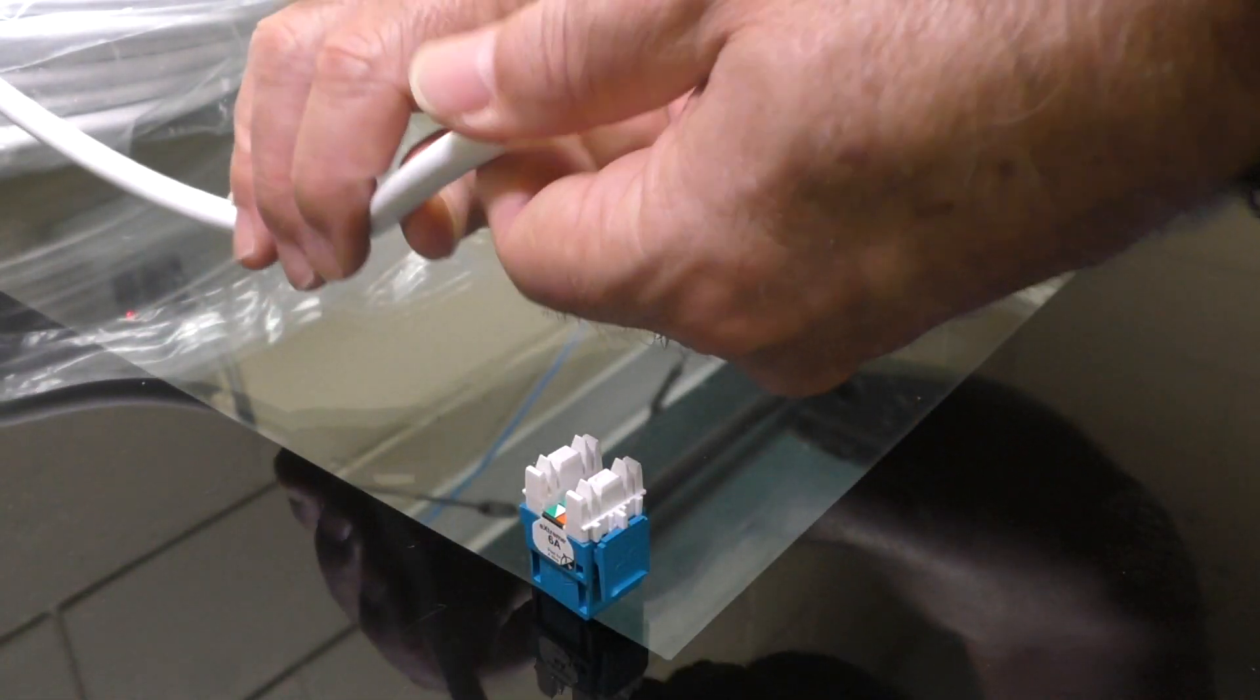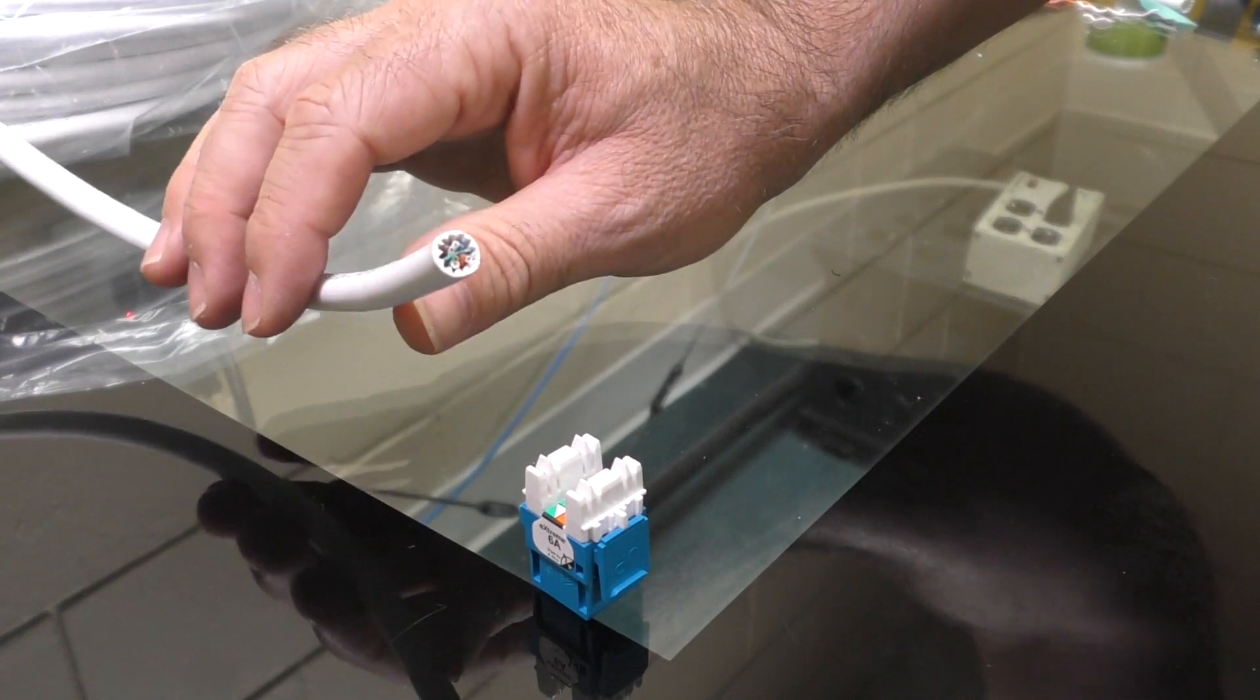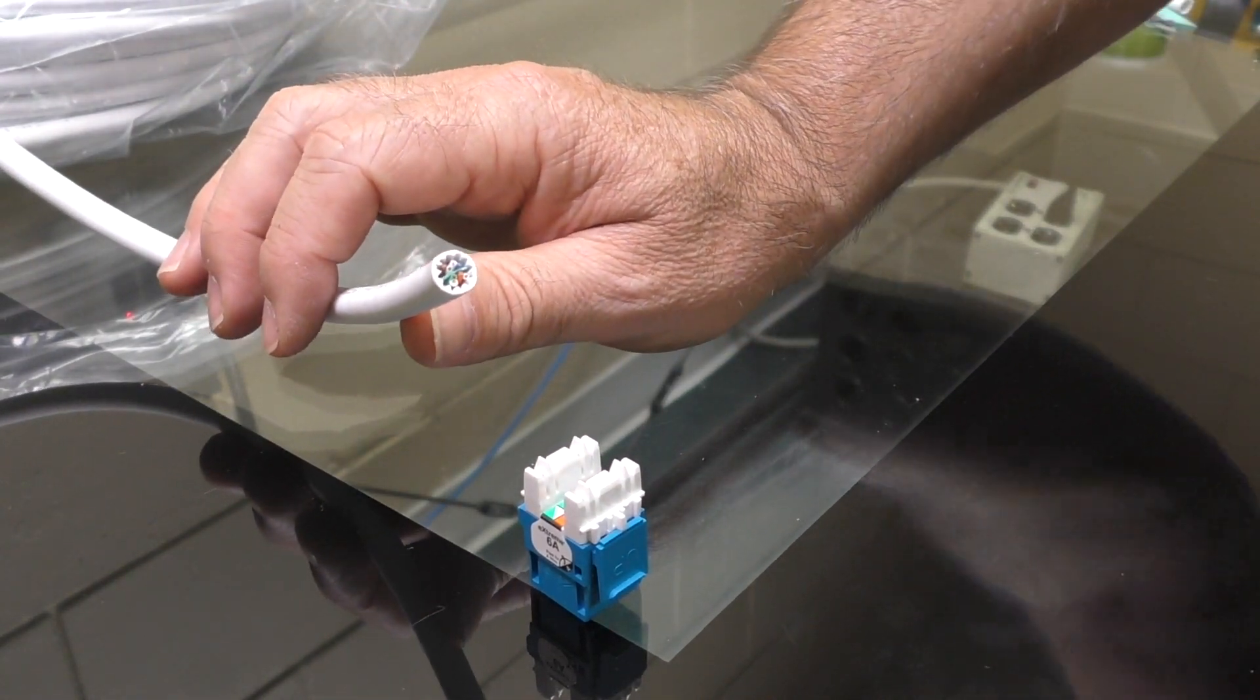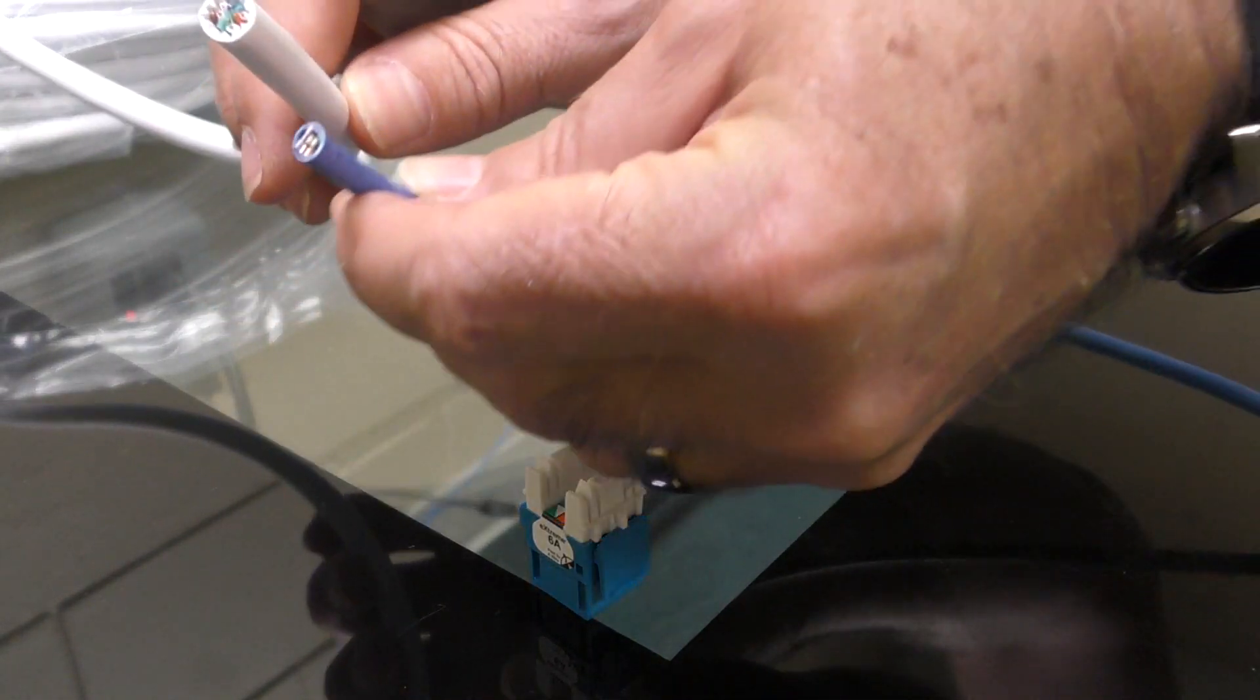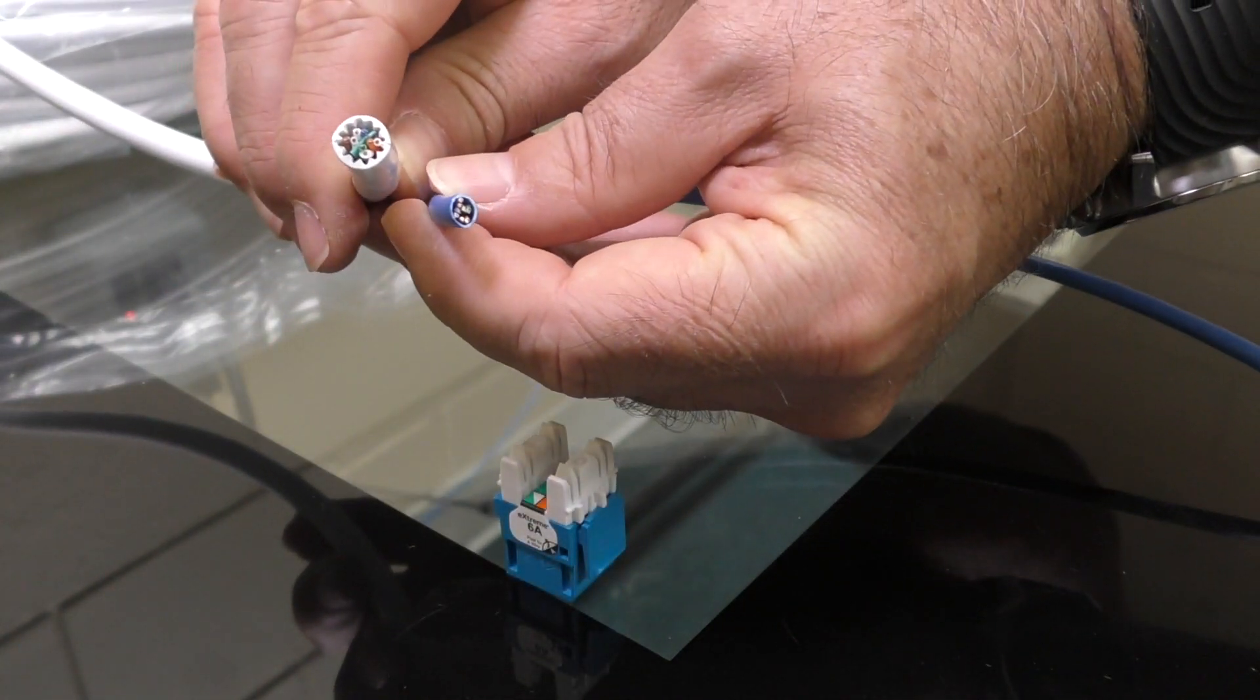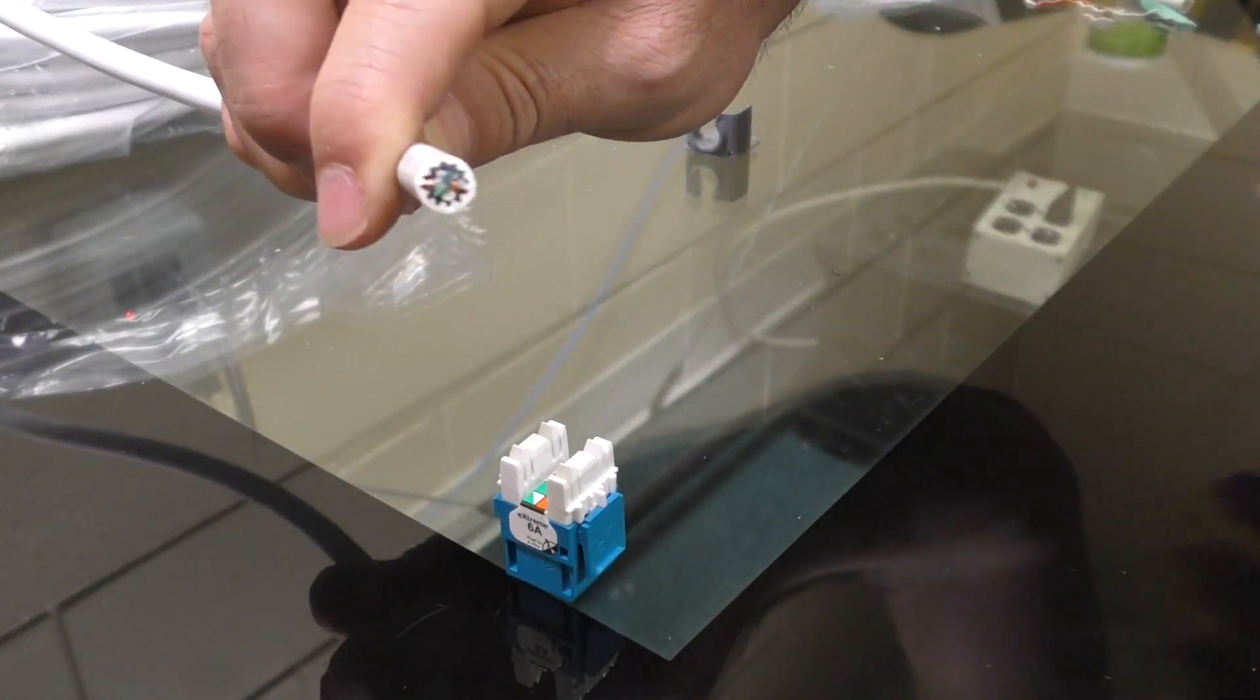Just to be clear, 6A is quite a bit different than 6 or 5E. So as a point of comparison, here's a 5E. See the difference in size? This is about as thick as a cable TV cable, like RG6.